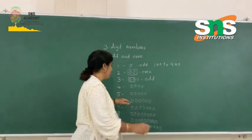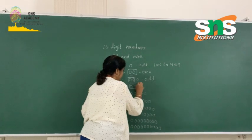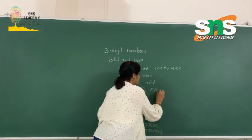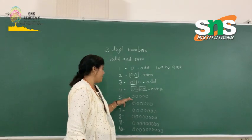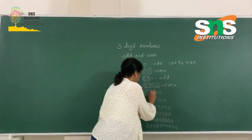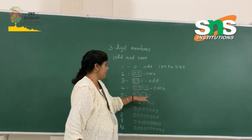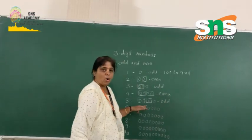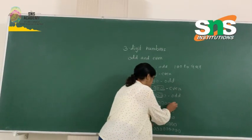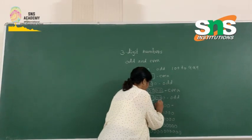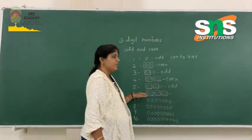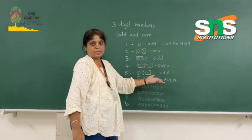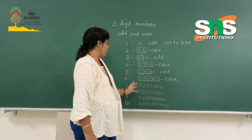For number 4, I can make pairs with all beads, so the number 4 is an even number. For number 5, after pairing, one bead is left over, so number 5 is an odd number. For number 6, there is no extra bead — I can make all beads into pairs. So the number 6 is an even number.